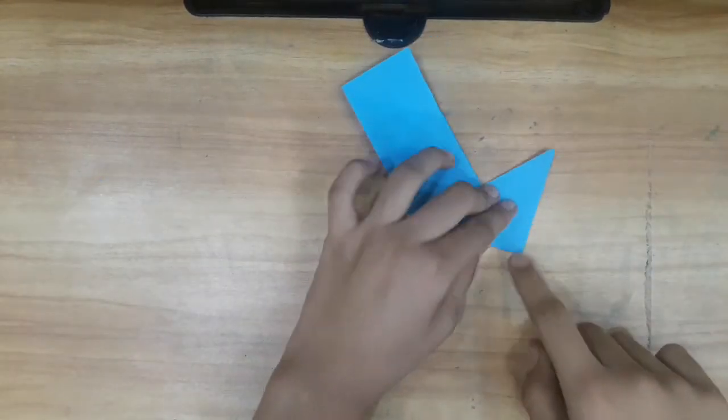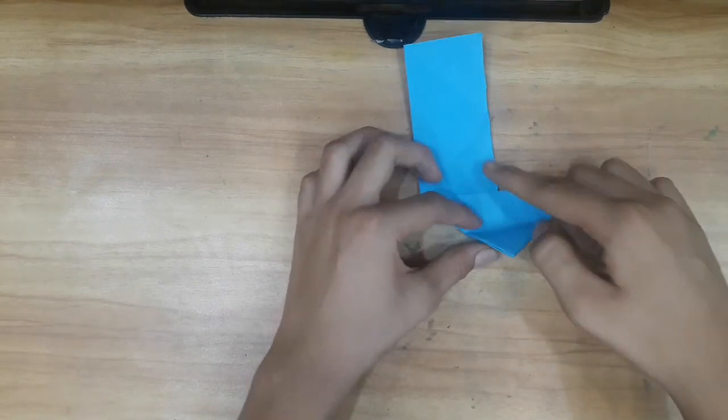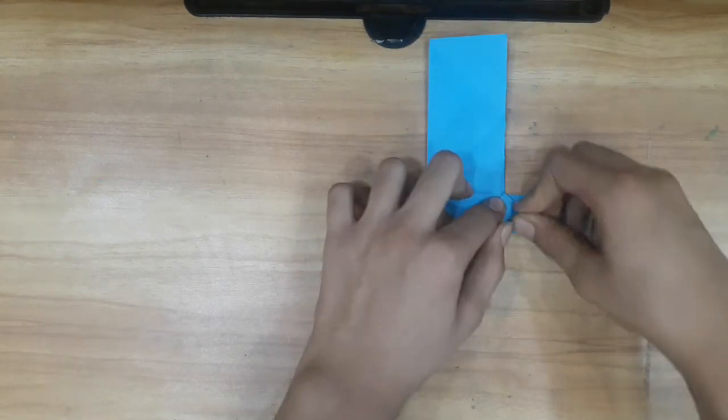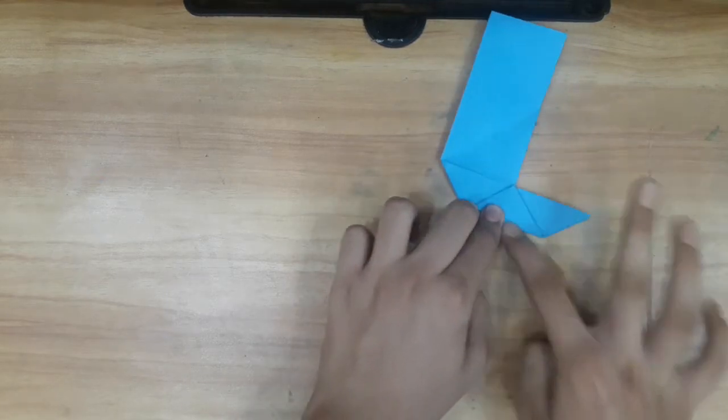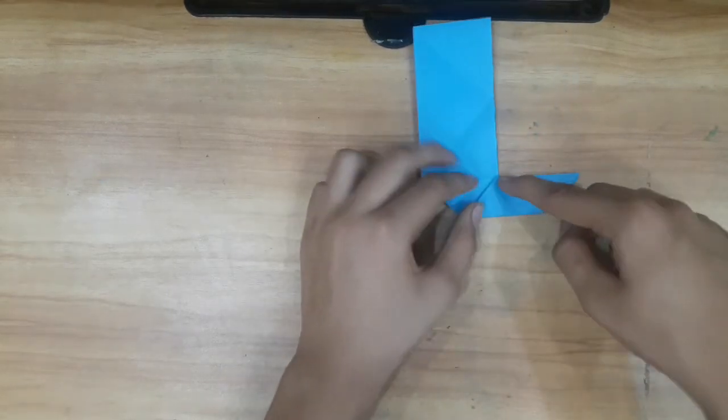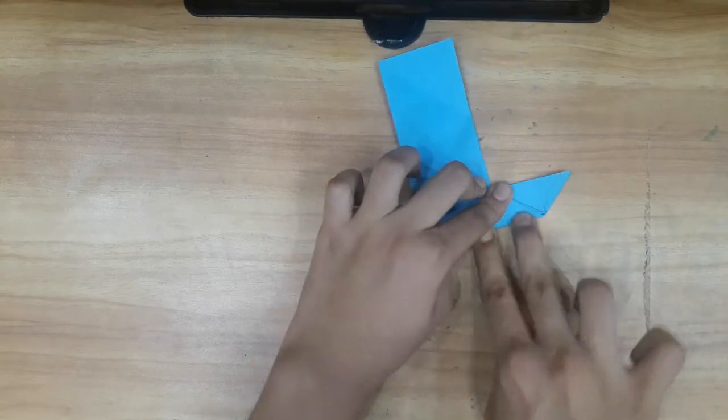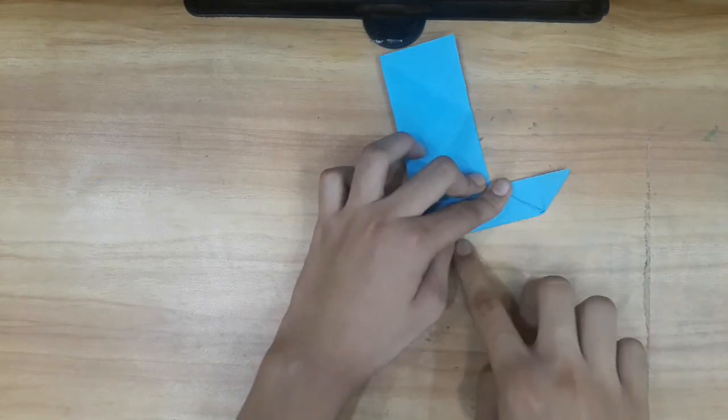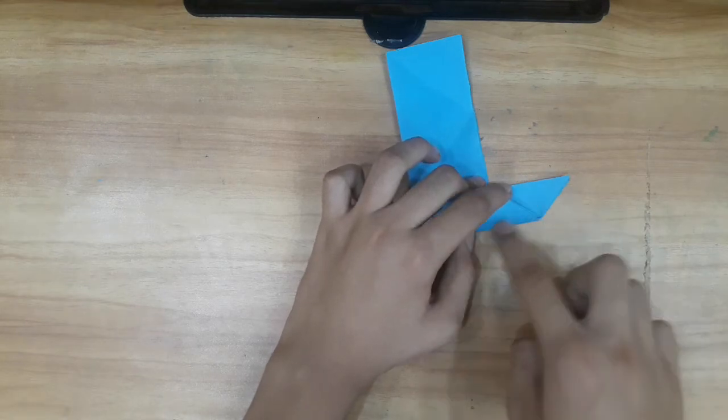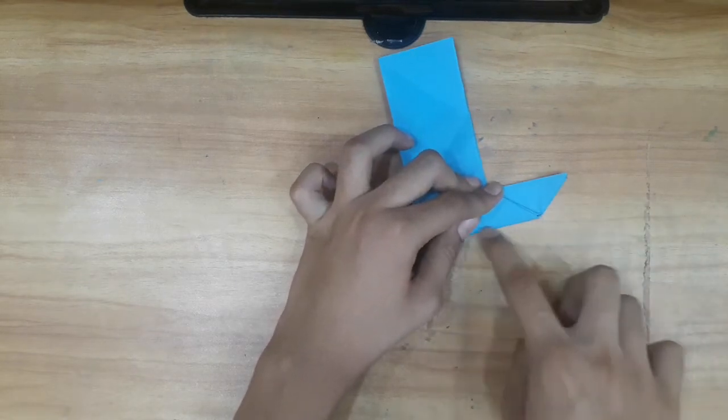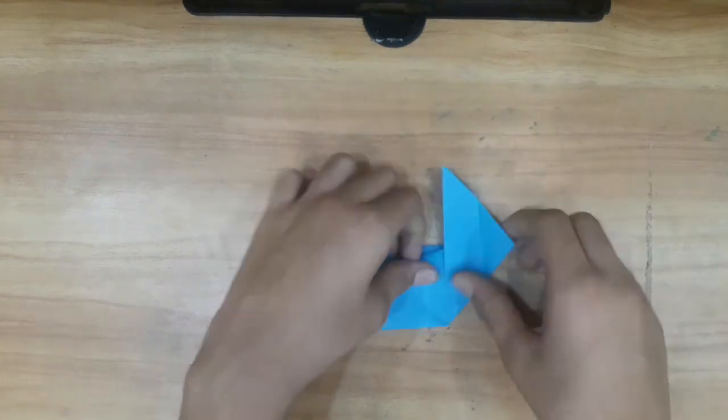Now we have to take this one corner and align it with this line like this. So we have aligned it, press it. We have to apply more pressure because here are some more layers. Now open it.